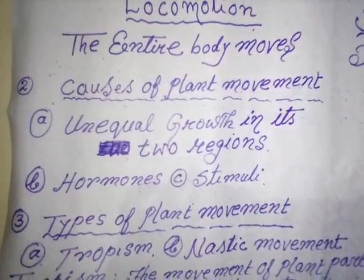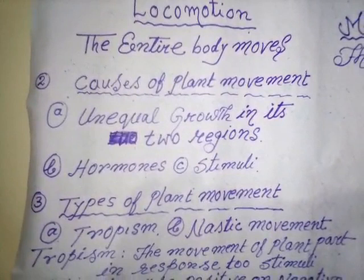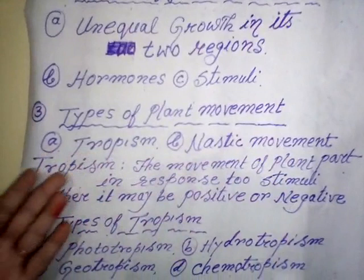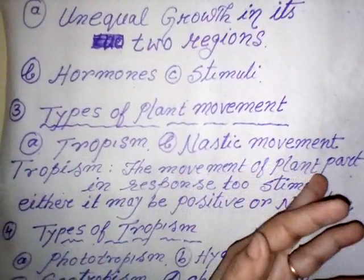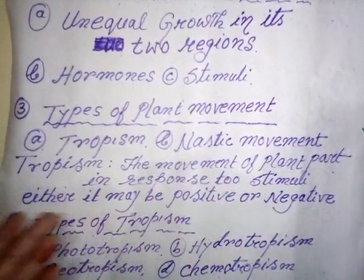Types of plant movement. There are mainly two types of plant movements: tropism and nastic movement. What do you mean by tropism? The movement of a plant part towards an external stimulus is known as tropism, or tropic movement. It is also known as directional movement.